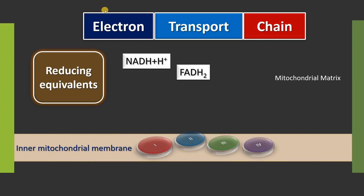These reducing equivalents which carry electrons are transferred to a series of complexes located in the inner mitochondrial membrane. They look like a chain, so this is called the respiratory chain: complex I, complex II, complex III, and complex IV. Besides these, there are electron carriers that we will be studying in a short moment.